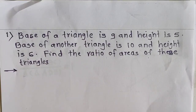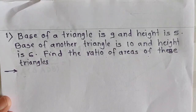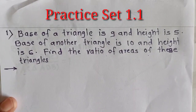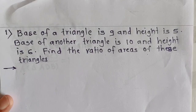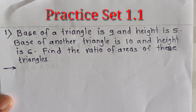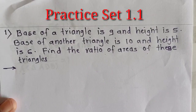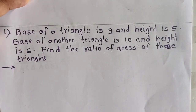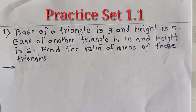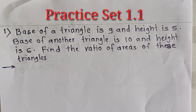Hello students, let us see Practice Set 1.1 from First Chapter Similarity. This Practice Set is based on the properties of areas of two triangles. The first property is the ratio of areas of two triangles is equal to the ratio of the product of base and the corresponding height. The second property: ratio of areas of two triangles with equal height is equal to the ratio of their corresponding bases, and if equal bases, then the ratio of their areas is equal to ratio of their corresponding heights. Let us see the first sum from this chapter.